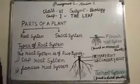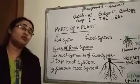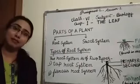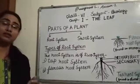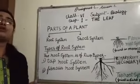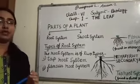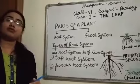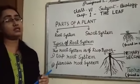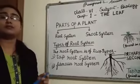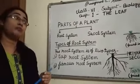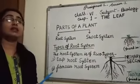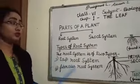Now the functions of root. The roots hold the plant firmly in the soil — root fixes the plant in the soil. Root also absorbs water and minerals from the soil for the growth of the entire plant. Photosynthesis is the process by which plants prepare their food, and plants absorb water through roots for this process.